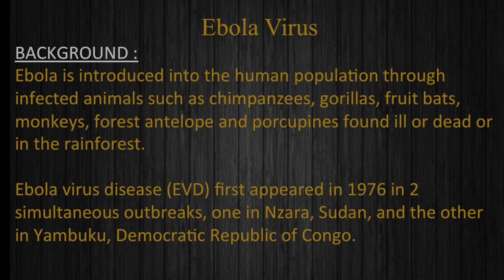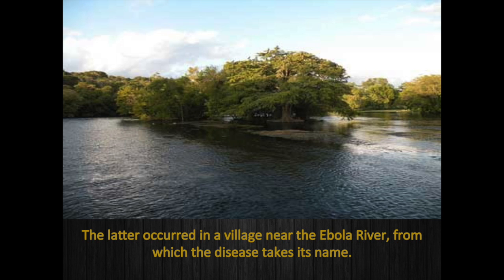Ebola virus disease first appeared in 1976 in two simultaneous outbreaks, one in Nsera, Sudan and the other in Yambugu, Democratic Republic of Congo. The latter occurred in a village near the Ebola river, from which the disease takes its name.